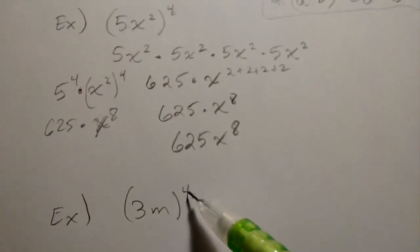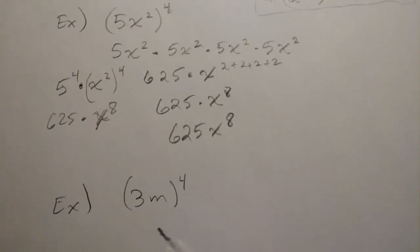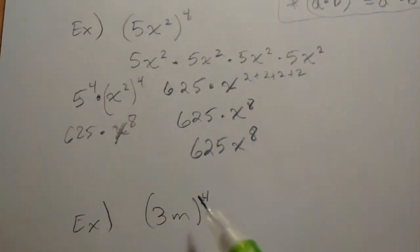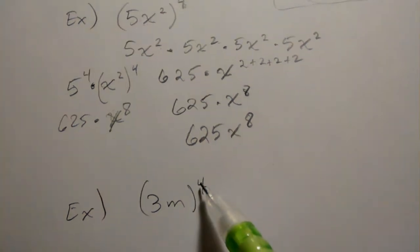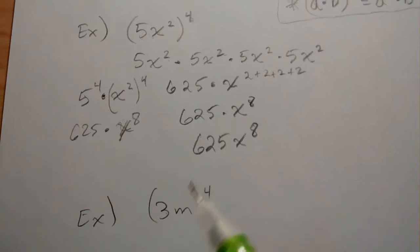I'm not going to write this down, but this 4 means multiplying 3m together in a string like we did here. The idea is that if I were to do that, you would come up with four 3's being multiplied with four m's being multiplied.